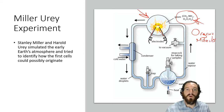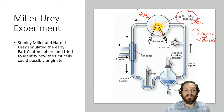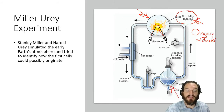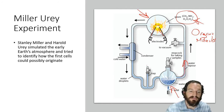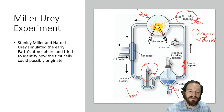They put all these inorganic things in the system, heated up the water to create steam and water vapor, which transferred around and eventually interacted with electrodes simulating lightning. Over time they would sample from the trap — and what they found were amino acids.